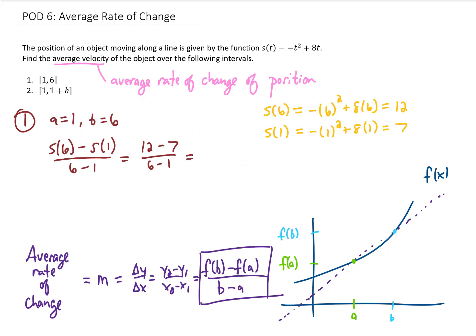We still have 6 minus 1 in the denominator. We can simplify this to 5 over 5, which gives us a final answer for our average rate of change, or average velocity of the object, of 1. That 1 could be in meters per second or miles per hour — it all depends on the units given for t and s in the problem. That's our answer to the first part.